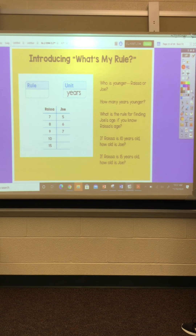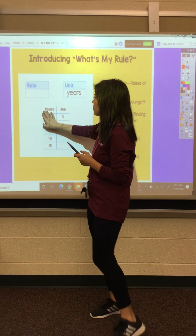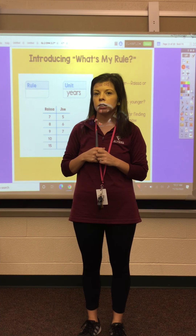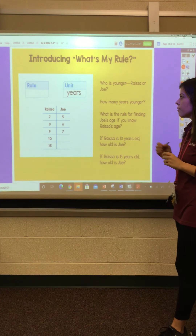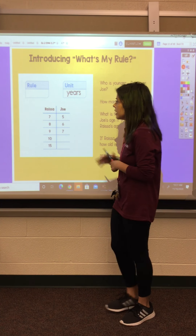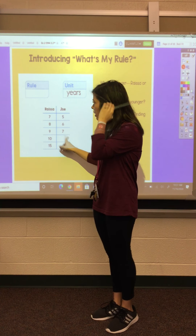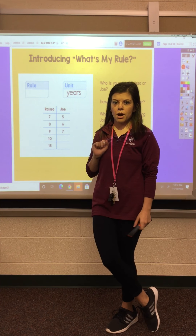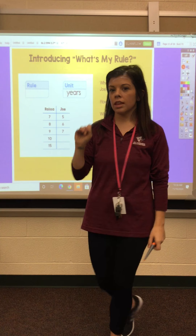Let's go ahead and try this now. We have Rissa and Joe. We need to figure out how many years younger — who is the younger one? If you said Joe, you're right. Joe is younger. We're going from bigger to smaller. We need to figure out how many years younger Joe is, so let's look and see if we can find a pattern. This side is the bigger number — that's Rissa's side. If we're at seven and we need to go to five, let's count back: seven, six, five. How many hops? If you said two, that's correct.